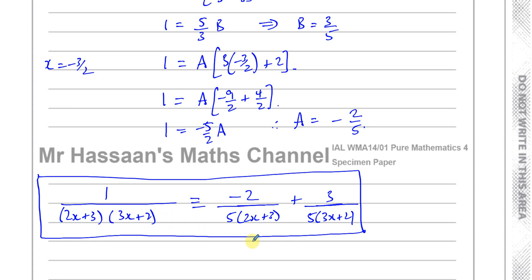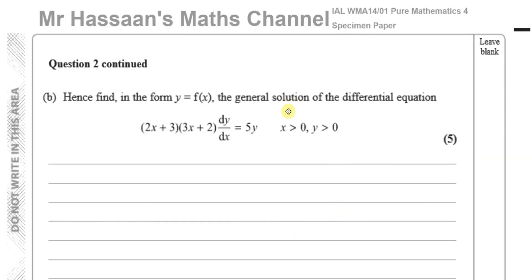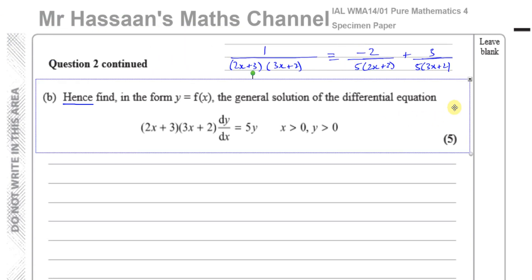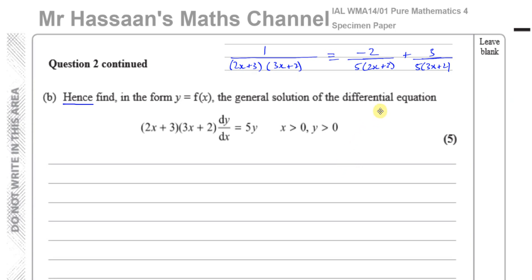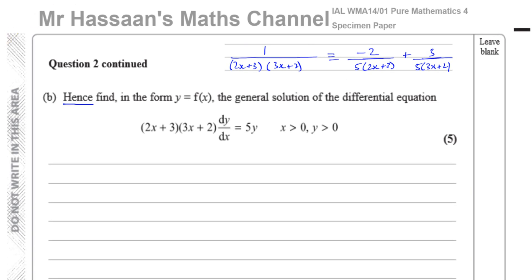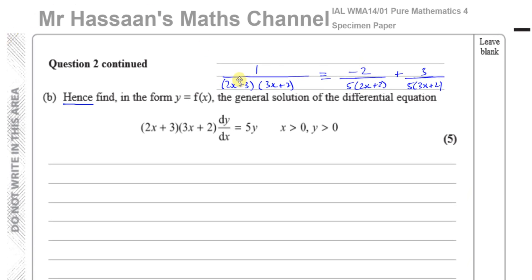Now we're moving to part B. The word 'hence' means we have to use what we just found. Part B asks us to find, in the form y = f(x), the general solution of the given differential equation. We're going to have to use our partial fractions result from part A. Let's start by solving the differential equation.